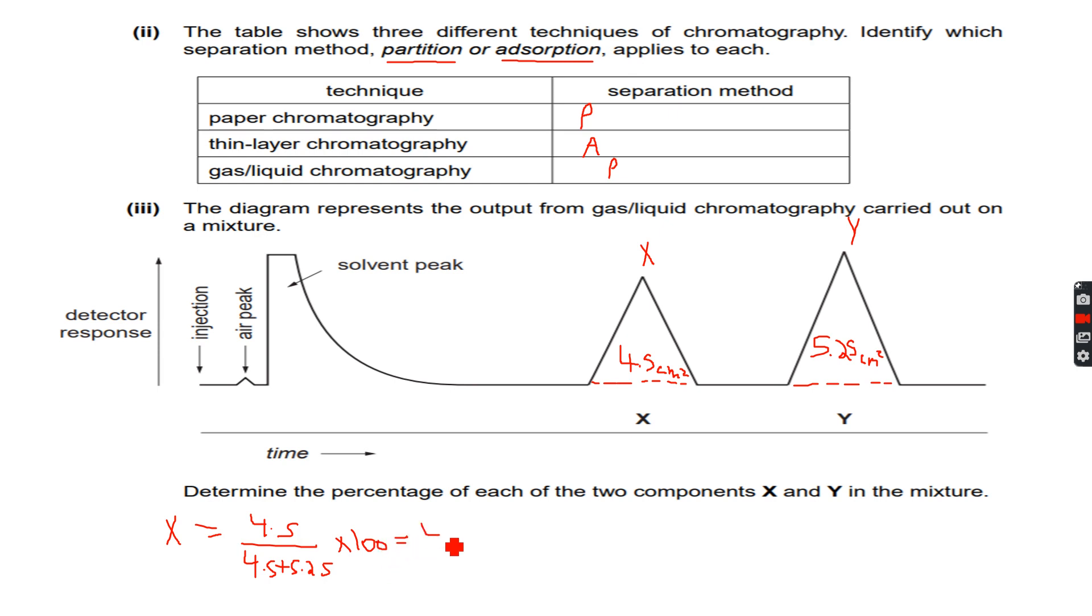You can round this off to 46 percent. For component Y, we do 5.25 over 4.5 plus 5.25, multiplied by 100, we get 53.8 percent. And when you add these two you get 100, which means obviously you have to get 100 because the solute consisted of only X and Y.